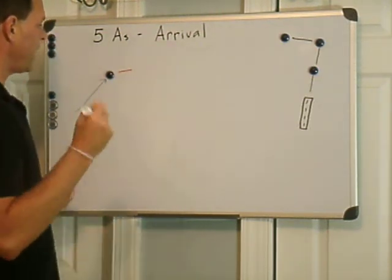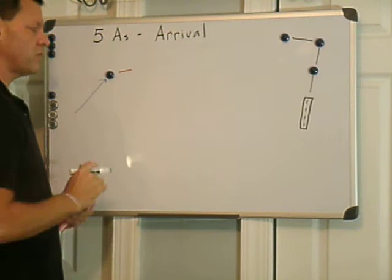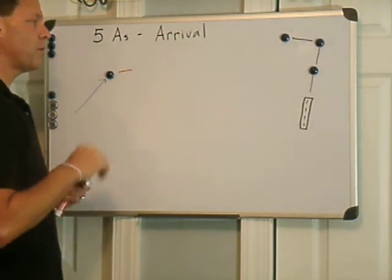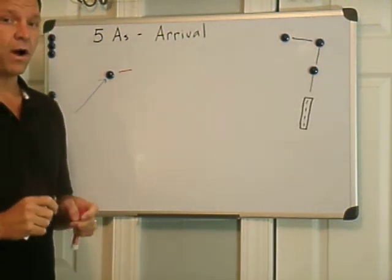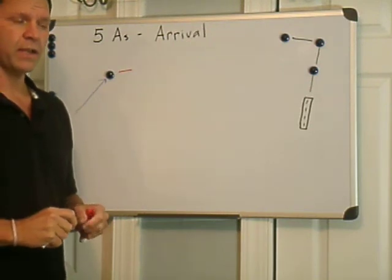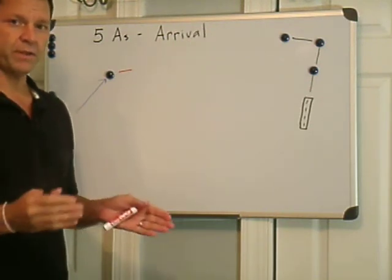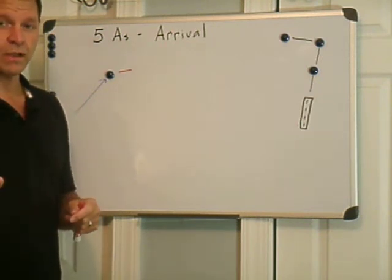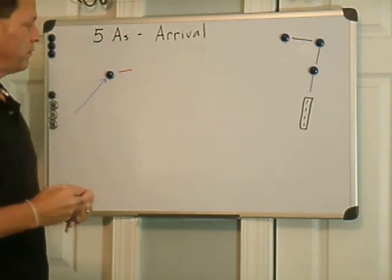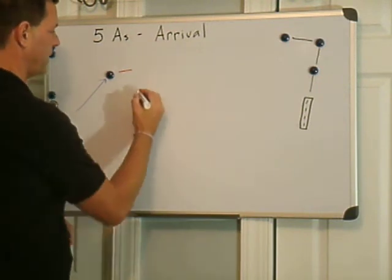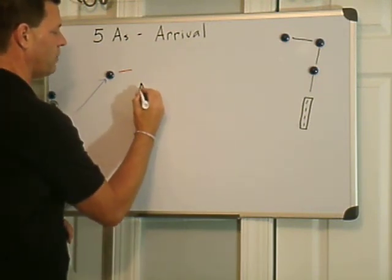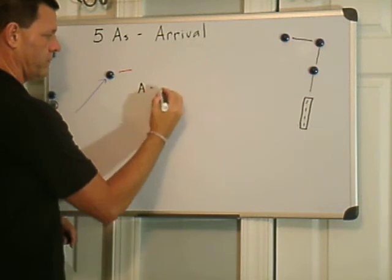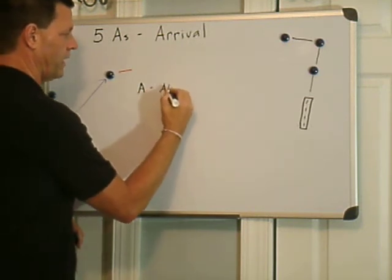The first A, after I cross my arrival transition point, is I'm going to tune in to the AWOS at the Dare County Airport. If you're going to a tower field, it would be the ATIS, or maybe an ASOS at another field, or sometimes you might get the weather from air traffic control. But the first A, essentially, is getting the automated weather.